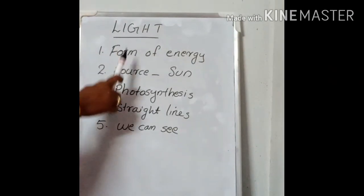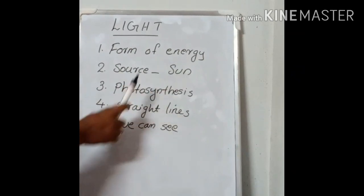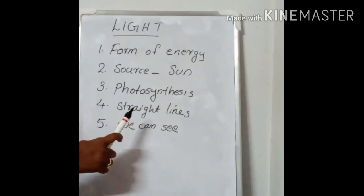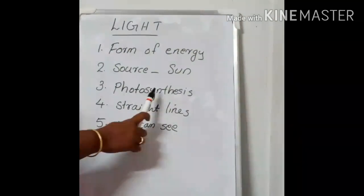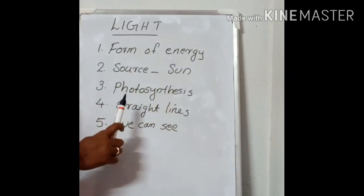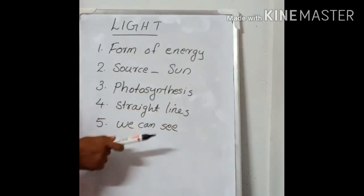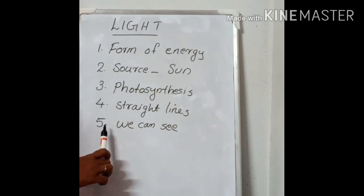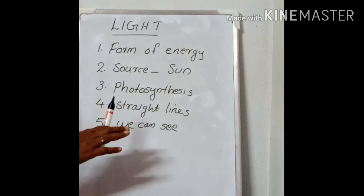So light is a form of energy, and the major source of light is sun. We know that light is essential for photosynthesis — plants prepare food with the help of sunlight. Another property is that light travels only in straight lines. Light does not have the ability to bend; it travels only along straight lines. Also, we can see things only in the presence of light.